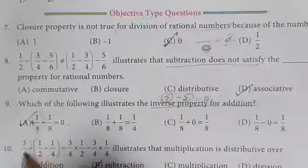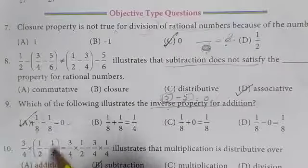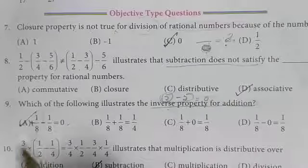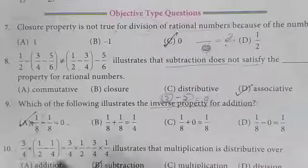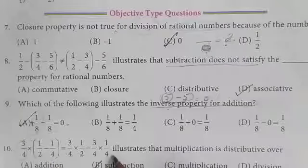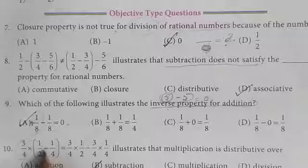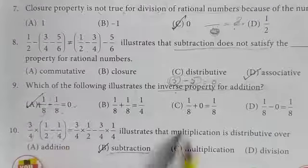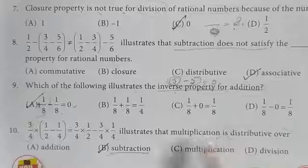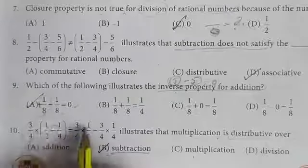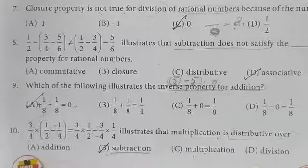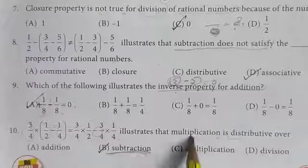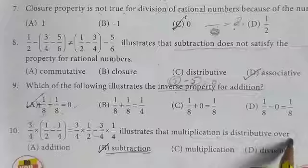See here: 3/4 × (1/2 - 1/4) = 3/4 × 1/2 - 3/4 × 1/4. This is the distributive property. You have a minus sign here, therefore this is distributive property over subtraction. Multiplication is distributive over subtraction. Here you have a minus sign, so the answer is subtraction — multiplication is distributive over subtraction.